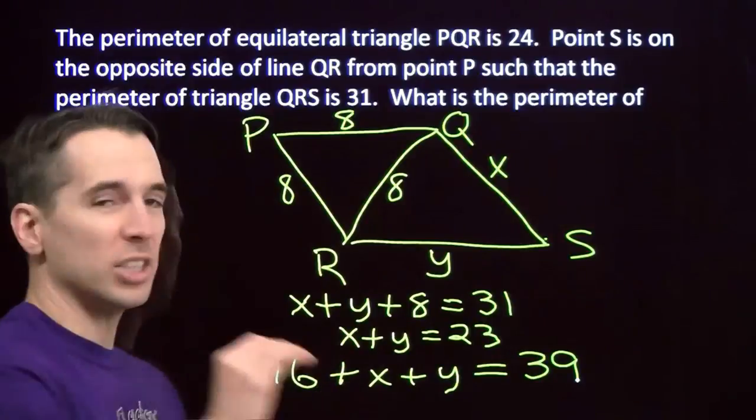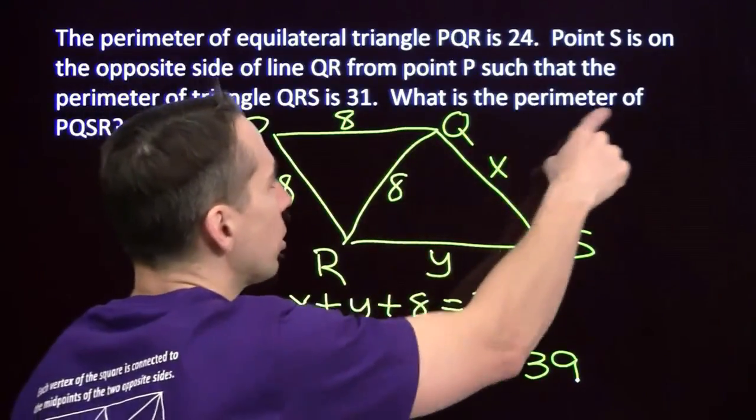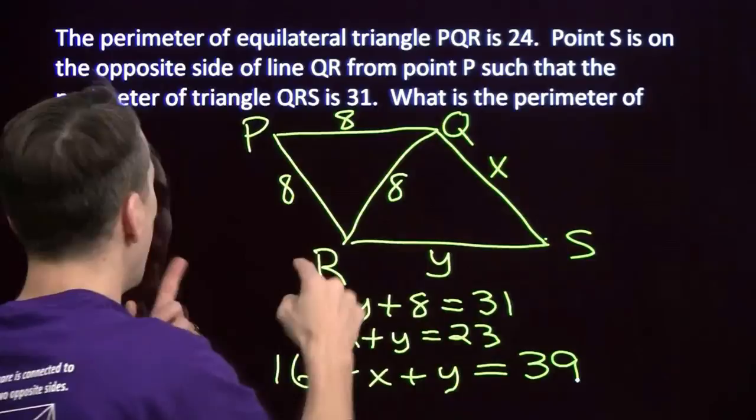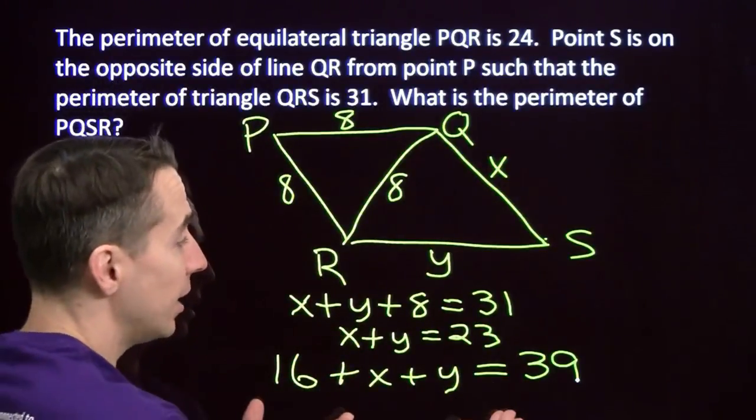The key strategy there is keep your eye on the ball. Focus on what you're looking for. What is the perimeter of P, Q, S, R? And you might see that you already have it and you're done.